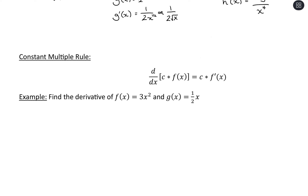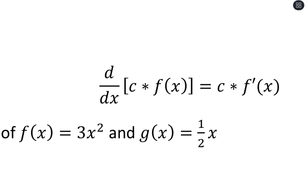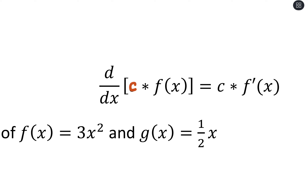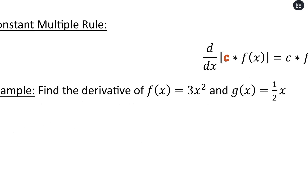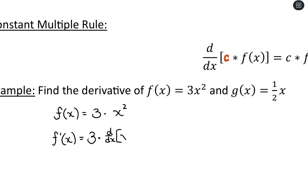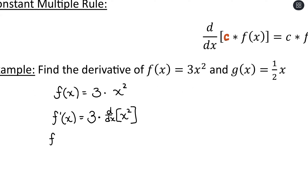Another one is our constant multiple rule. This tells us if we have some function of x being multiplied by a constant, we keep that constant out front and apply the derivative to just the function. So for f(x) = 3x squared, we can think of this as 3 times x squared. When taking the derivative, we have 3 multiplying, but we focus the derivative rules on just x squared. So we'll have 3 times — and then taking the derivative of x squared, the exponent comes out front to multiply, giving us x to the 2 minus 1, which is 1.